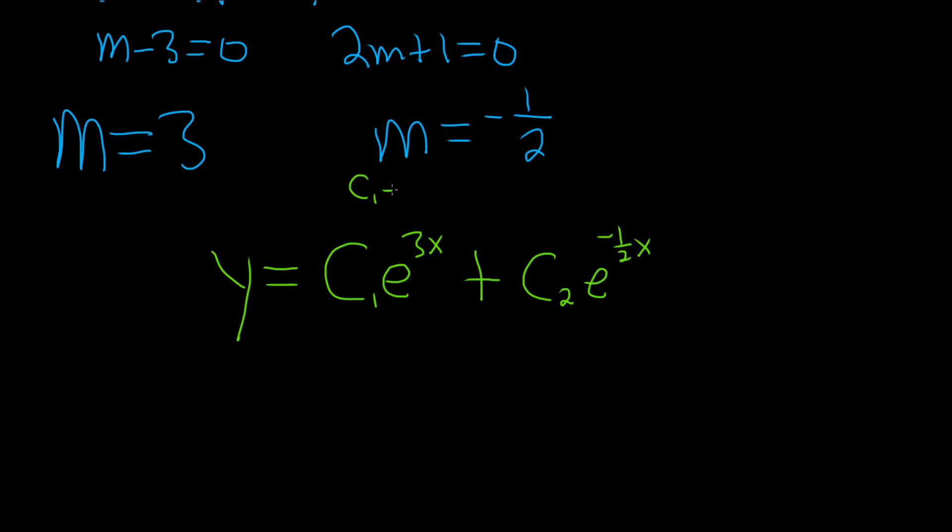The formula is y equals c1e to the 3x plus c2e to the negative 1 half x. I just wrote the answer down. I didn't tell you the formula. Sorry. It's c1e to the m1x plus c2e to the m2x. So basically, you just put them both there. You put the number here, and then you put the number here in this formula. And that would be it.